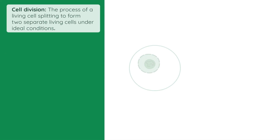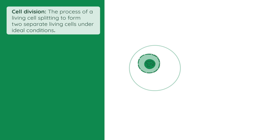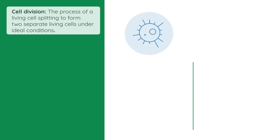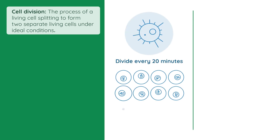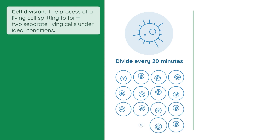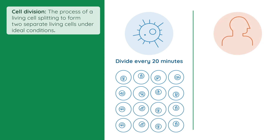Cell division is the process of a living cell splitting to form two separate living cells. Cells can increase in number very rapidly. For example, bacteria can divide every 20 minutes under ideal conditions. In contrast to this, human cells can divide at a maximum rate of once every few hours.